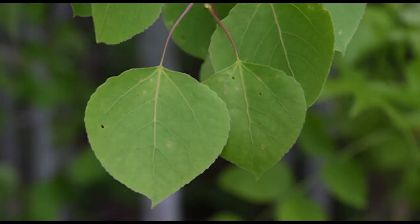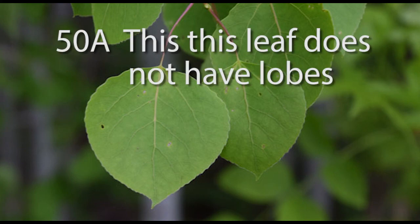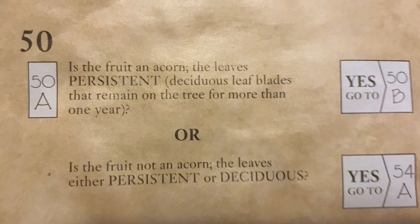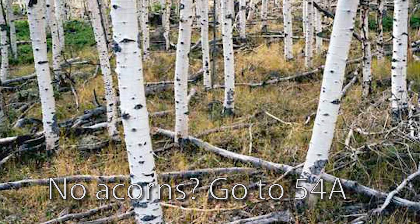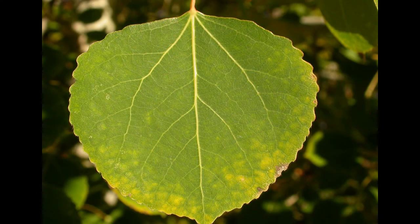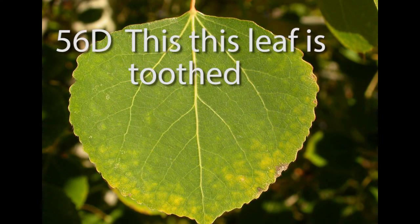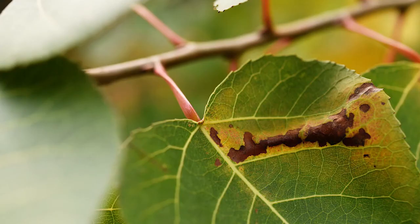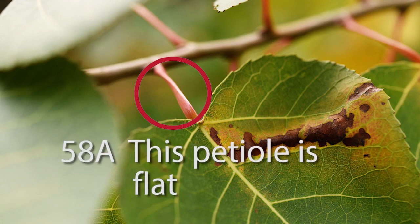Does this leaf have lobes? If you chose 50A, you're correct. Since fruit isn't on the tree year-round, look for evidence on the ground. 'Entire' means the leaf edges are smooth. Since these edges are toothed, let's move to 56D. The next question is about the petiole — the petiole is a leaf stalk that connects the blade to the twig. Look at the petiole: is it flattened, or is it round and able to move between your fingers?